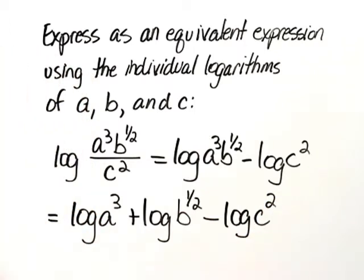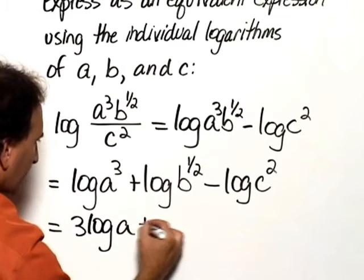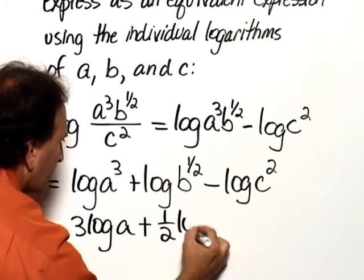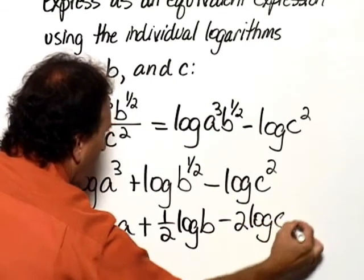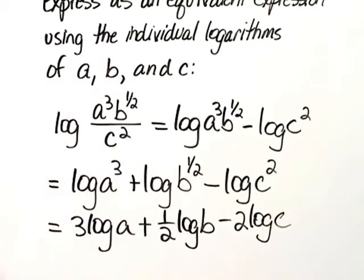Now we'll apply the power rule for each of these expressions. So this would become 3 log of A plus 1 half log of B minus 2 log of C. And that would be the equivalent expression using the individual logarithms of A, B, and C.